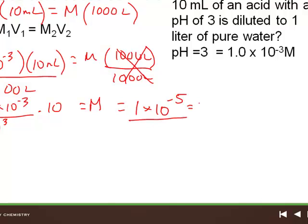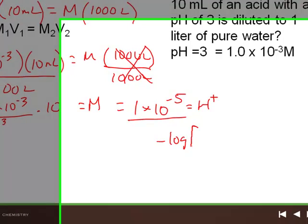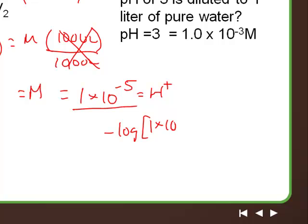And this equals a concentration of 1 times 10 to the negative 5th. So that's the hydrogen ion concentration. If we take the negative log of that number, 1 times 10 to the negative 5th, we know that equals 5. So this is another way of solving this problem.